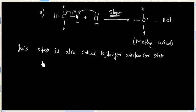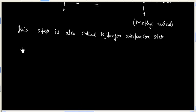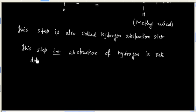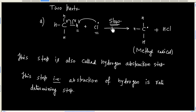This step is the slow step, and it basically controls the rate of reaction. We can see that the abstraction of hydrogen is the rate-determining step, which is also called the RDS.